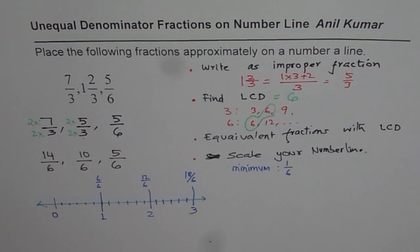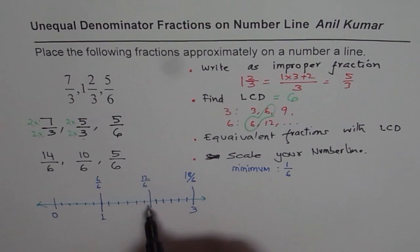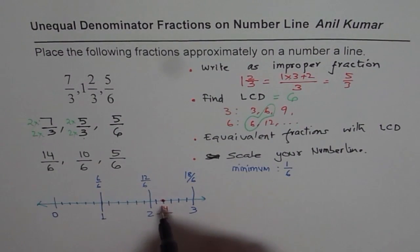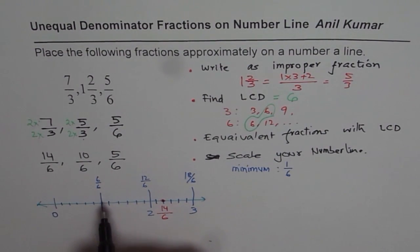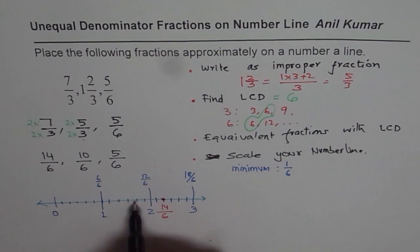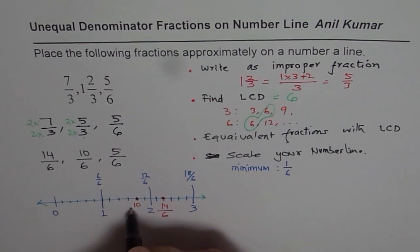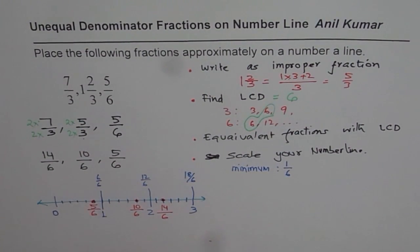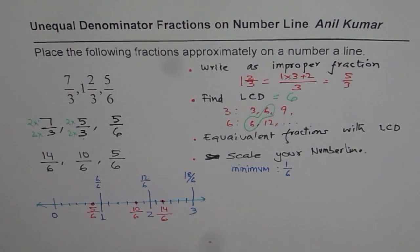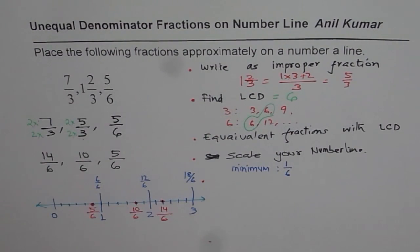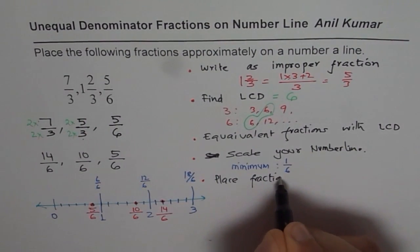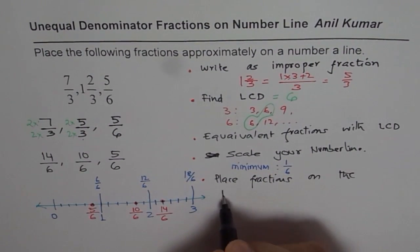Now let's place these fractions on the number line. First one is 14 over 6. So 12, 13, 14. That is 14 over 6 for us. 10 over 6: 6 is one whole, then 10 means 7, 8, 9, 10. So that is 10 over 6. The last one is 5 over 6, which is right there. That is how you place your fractions and that is your final step.